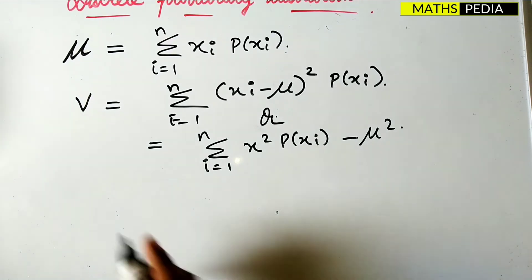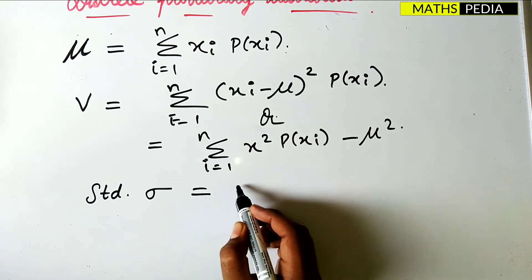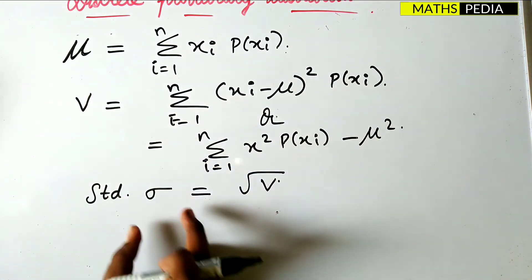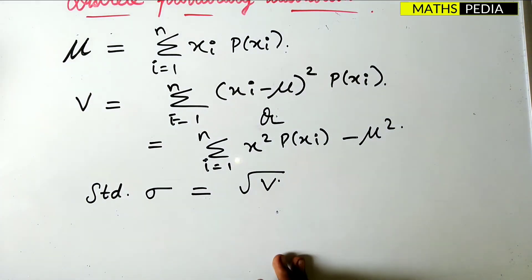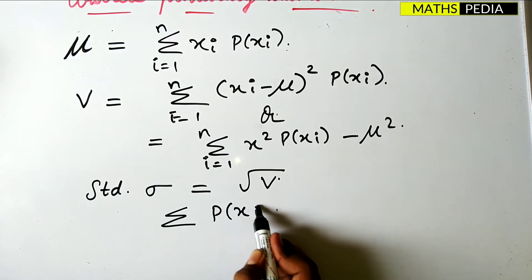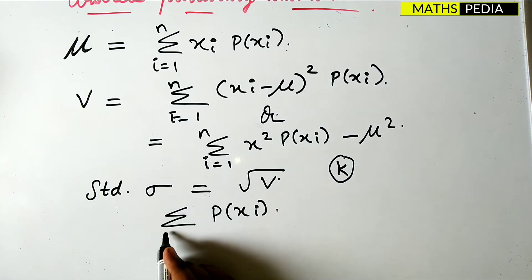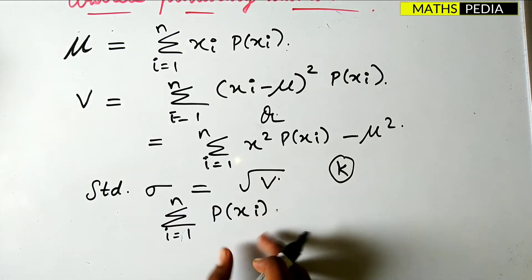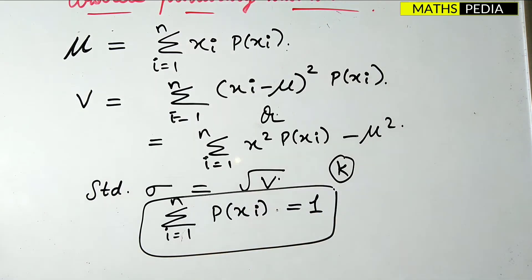The standard deviation, denoted Sigma, equals the square root of the variance V. Whenever they ask for standard deviation, you first find the variance, then take the square root. Regarding total probability: if a question asks you to find a missing value K, you directly apply the condition that the summation of all probabilities must equal one, and from that you can get the missing value.